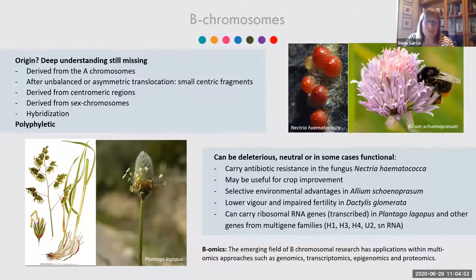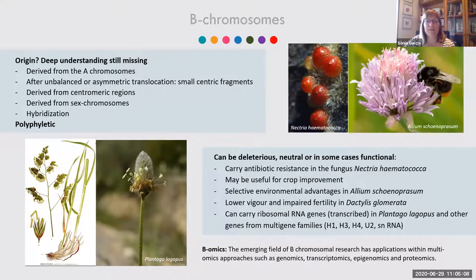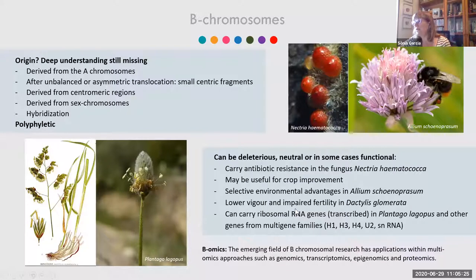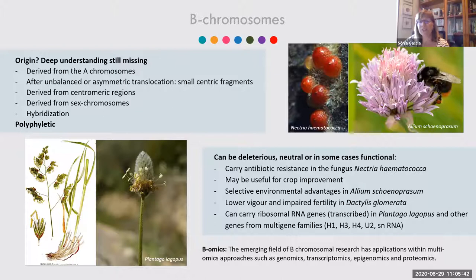What do B chromosomes do? Sometimes they are bad, sometimes they are good, and sometimes they do nothing. For example in some fungi they can carry antibiotic resistance and may be useful for crop improvement, carrying useful genes somewhat like a plasmid. They can have selective environmental advantages in Allium and other species. However, they have been related to lower vigor or impaired fertility in plants such as Dactylis glomerata.